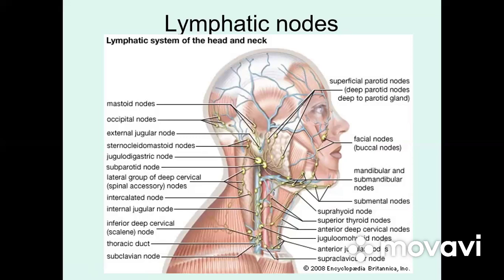The lymphatic nodes of the neck are divided into anterior and lateral, and both can be divided into superficial and deep. The superficial cervical lymphatic nodes are located in the subcutaneous tissue of the neck at the level of the anterior cervical triangle, lying more externally than the superficial lamina of the cervical fascia. The deep cervical lymphatic nodes lie around the major vessels of the neck. The lateral superficial cervical lymphatic nodes lie around the external jugular vein and can number from three to nine.